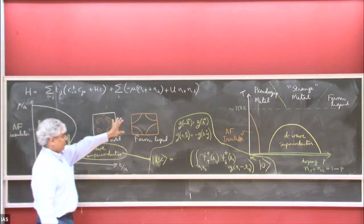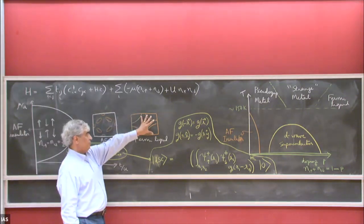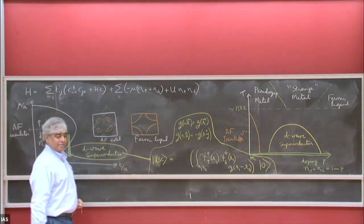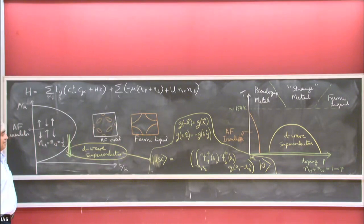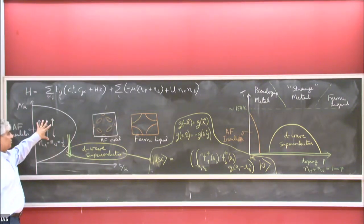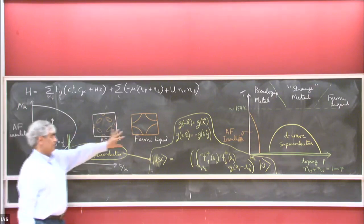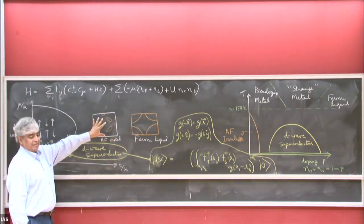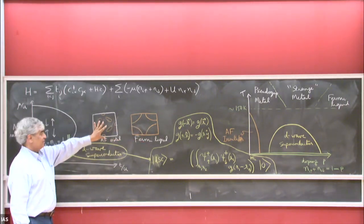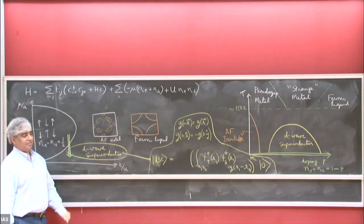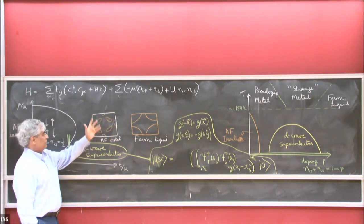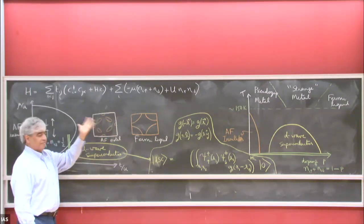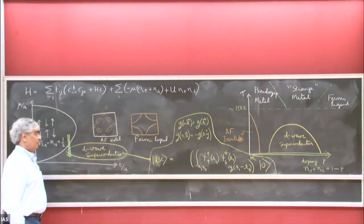At very small U there's a Fermi liquid state where the electrons are nearly free. We then studied the onset of this broken symmetry in the Fermi liquid and discovered that there's a metallic state that's an antiferromagnet, in which the Fermi surface has become rather complicated.